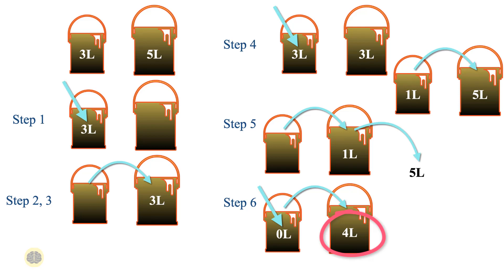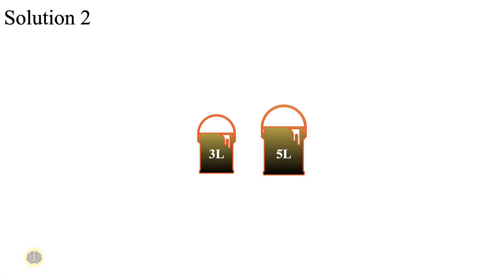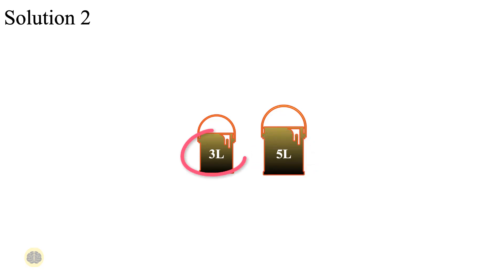But there is an easier solution with fewer steps. You can get 4 liters by pouring 1 liter out of the 5-liter bucket. You need a 1-liter space to pour that 1 liter into, which means leaving 2 liters in the 3-liter bucket. To do that, you need to get 2 liters into the 5-liter bucket first, so you can then put those 2 liters into the 3-liter bucket.